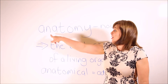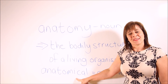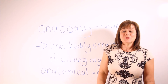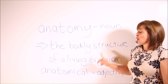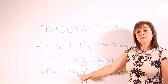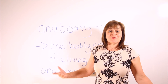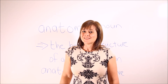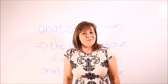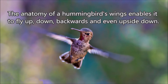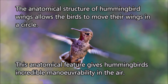Our last two words are anatomy and anatomical. Anatomy is a noun referring to the bodily structures of a living organism, and anatomical is the adjective form. The anatomy of a hummingbird's wings enables it to fly up, down, backwards, and even upside down. The anatomical structure of hummingbird wings allows the birds to move their wings in a circle, giving hummingbirds incredible manoeuvrability in the air.